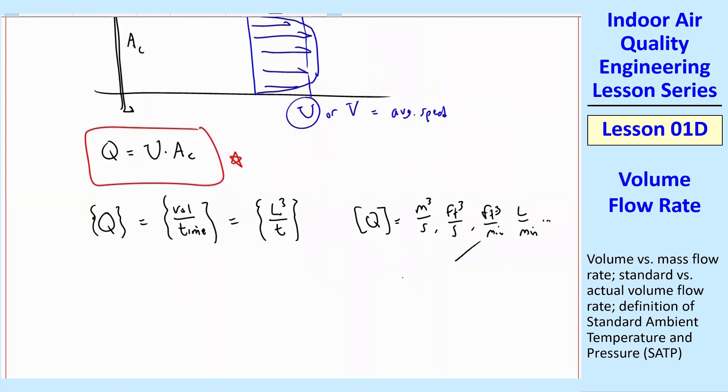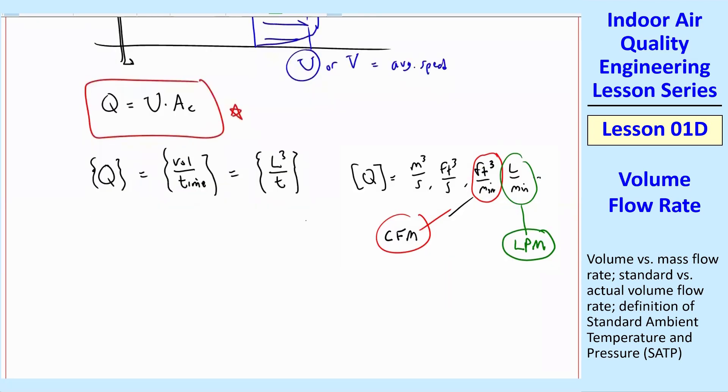There's some special cases, such as CFM, which is cubic feet per minute, or feet cubed per minute, which is commonly used in the HVAC industry and with air pollution studies. And LPM, liters per minute, is also popular if you use metric. Unfortunately, this air pollution business is a mix of English and metric units. So we'll do both as necessary.